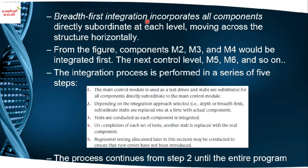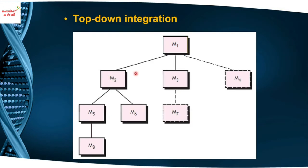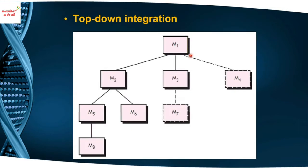Breadth-first integration incorporates all components directly subordinate at each level, moving across the structure horizontally — that is, level by level. For example, from the figure, components M2, M3, and M4 are directly related to the main program.